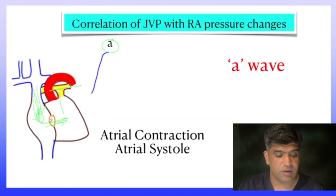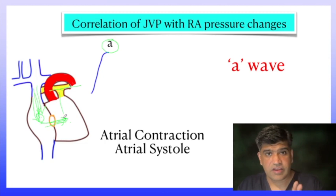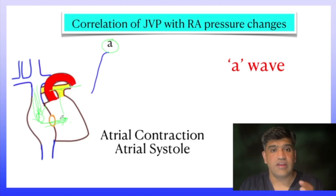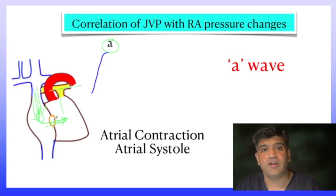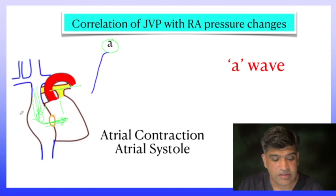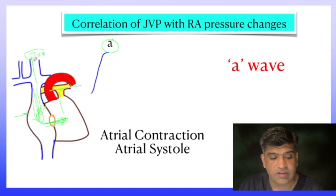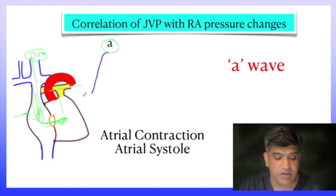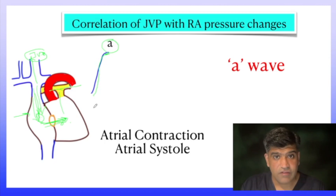Blood comes into the RA and from the RA goes to the right ventricle. At the last end of the right atrium filling, when the right atrium drains into the RV, there is atrial systole — the atria contracts and pushes blood into the right ventricle. When it contracts and pushes the blood, there is an upward movement of the JVP. This upward movement is what we call the A wave. So the A wave is caused by atrial contraction, or atrial systole.